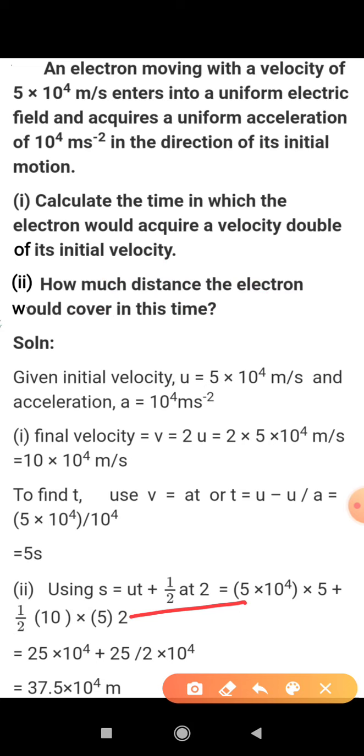We are having v, u, and a. We can use the second equation as well as third equation. Using the second equation, place the values and we got the answer 37.5 × 10⁵ meters. So with the help of such ways we can easily solve the numerical. Thank you.